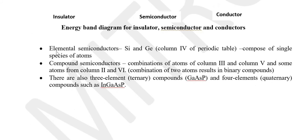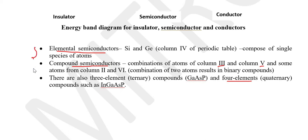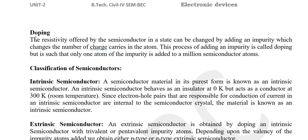We have two types of semiconductors: elemental semiconductors and compound semiconductors. Elemental semiconductors contain a single species of atom, like silicon and germanium, found in column 4 of the periodic table. Compound semiconductors are formed by combination of column 3 or column 5 with column 4 — for example, gallium arsenic phosphide, which is a ternary compound. If four elements are combined, it is called a quaternary compound, such as indium gallium arsenic phosphide.